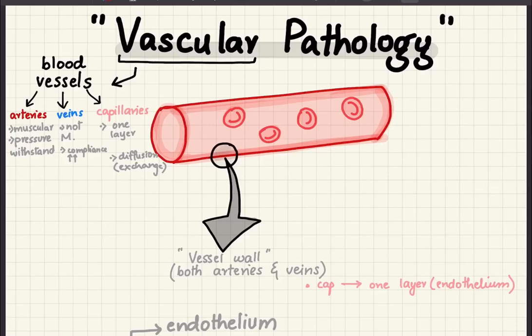This first lecture of vascular pathology is basically going to be about vasculitis, but before that I wanted to give a general overview or background about blood vessels and their histology. Vascular, of course, refers to blood vessels, and we know that we have three types of blood vessels in the body.